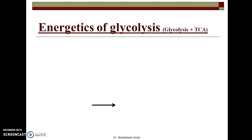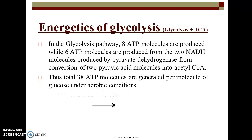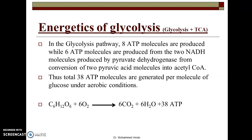If we see the whole energetics of glucose metabolism — that is glycolysis plus TCA — in glycolysis eight ATP molecules are produced, while six ATP molecules are produced from two NADH molecules generated by pyruvate dehydrogenase during conversion of pyruvic acid into acetyl-CoA. Thus a total of 38 ATP molecules are generated per molecule of glucose under aerobic conditions. One glucose molecule, under aerobic conditions, is completely oxidized into carbon dioxide and water and gives us 38 ATPs.